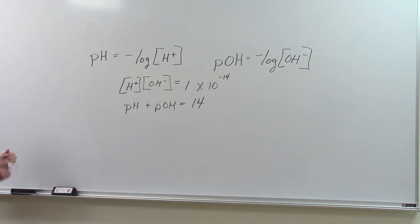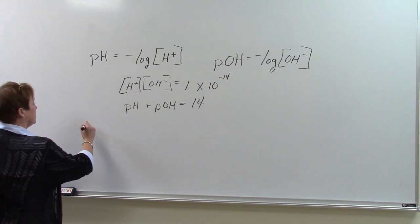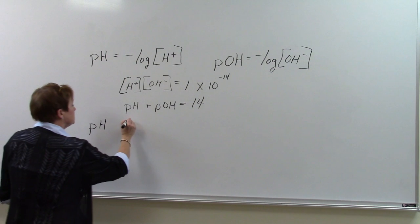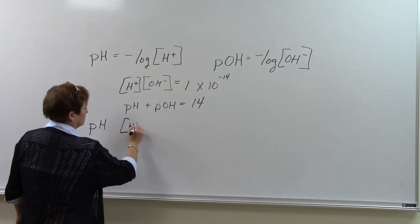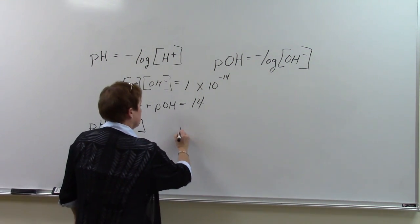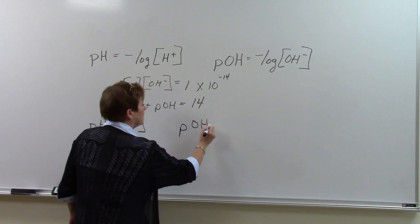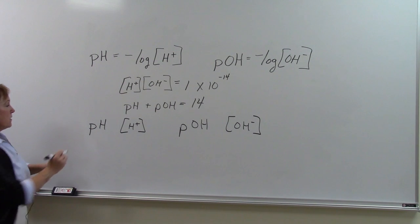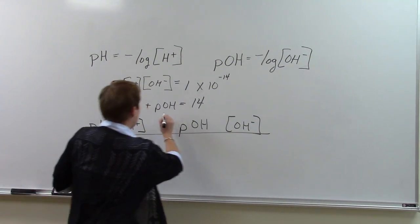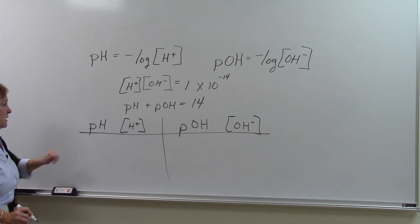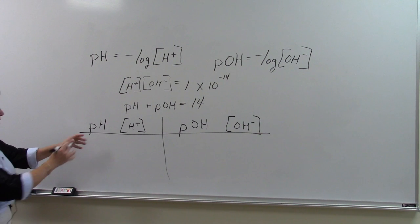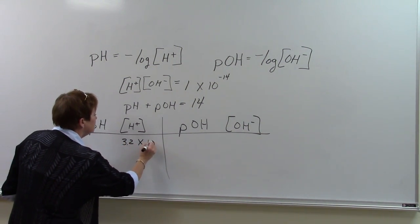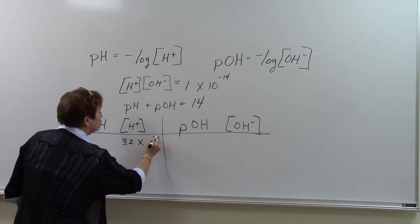So if we are making a table, let's say we give you the hydrogen ion concentration, and then we want to solve for the pOH and the hydroxide ion concentration. I'm making a table. If I say, for example, the hydrogen ion concentration is 3.2 times 10 to the negative 5th.